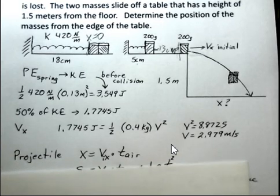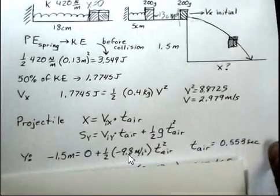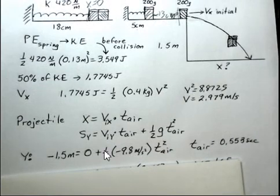Now, for the projectile motion, the x distance is the velocity in the x direction. That's a constant. We're going to ignore air resistance. We have a constant 2.979 meters per second. We need the time in the air.